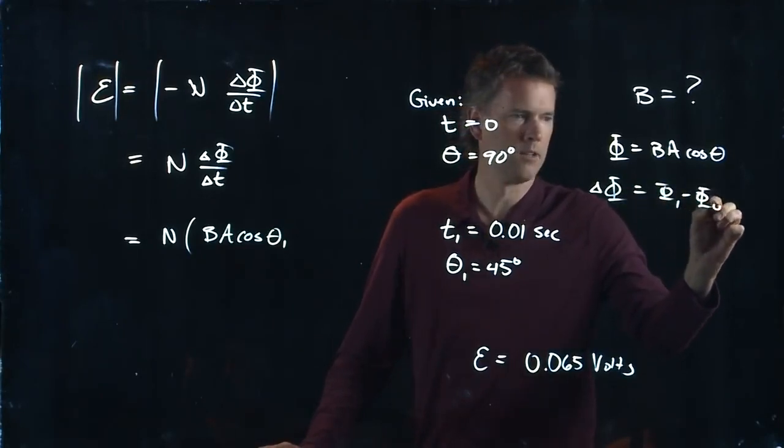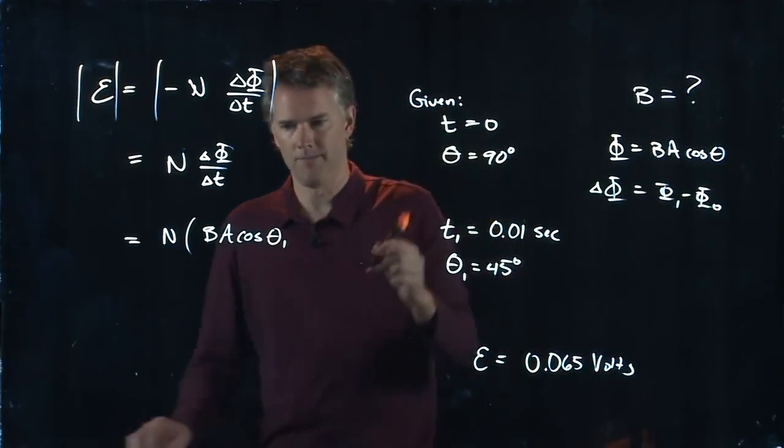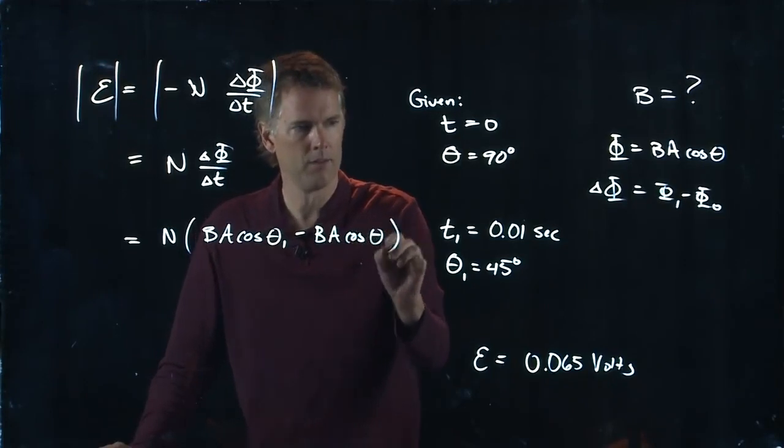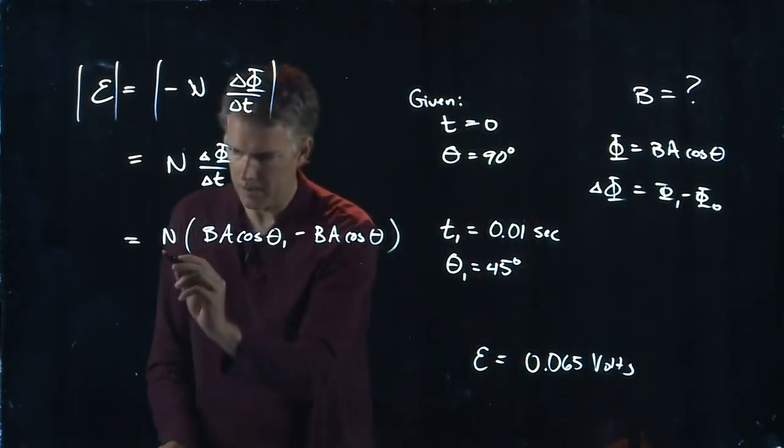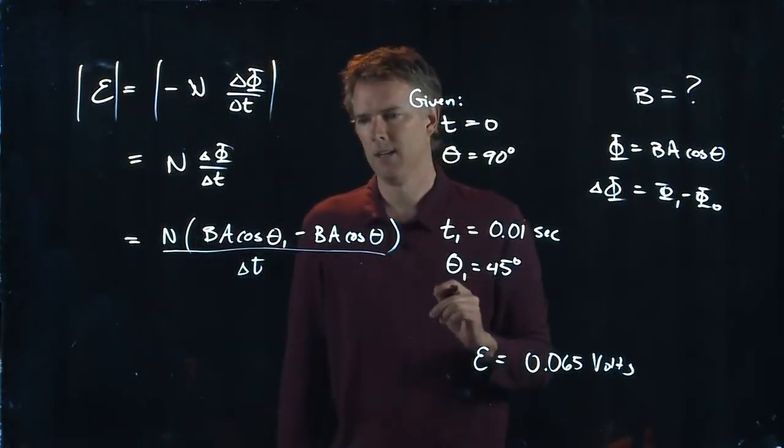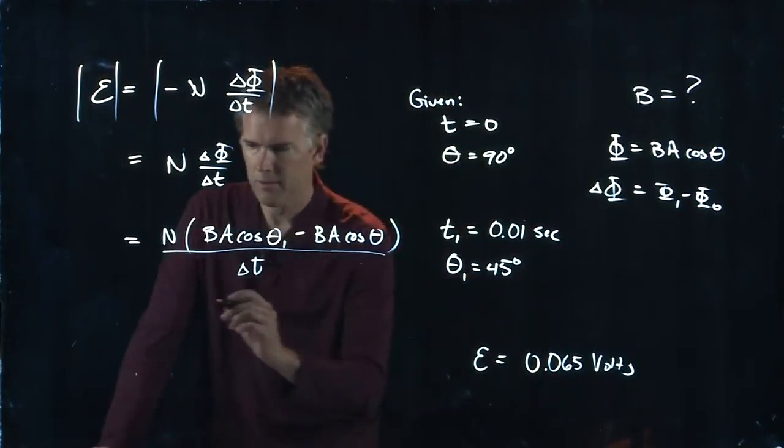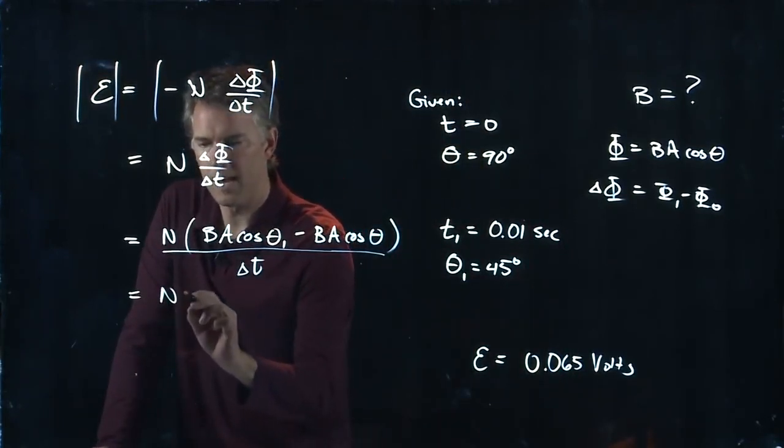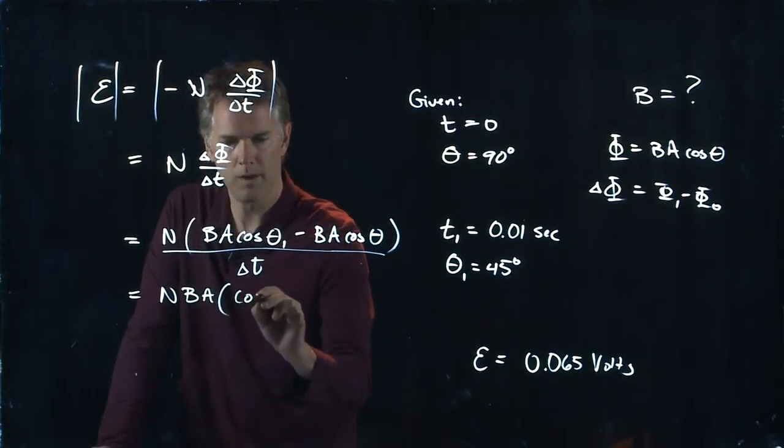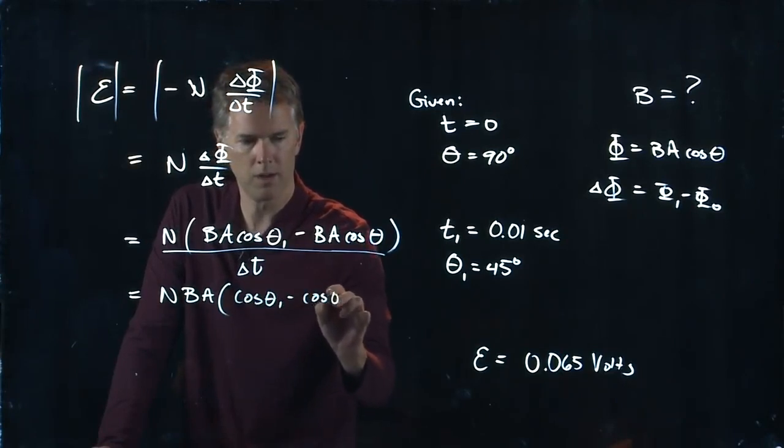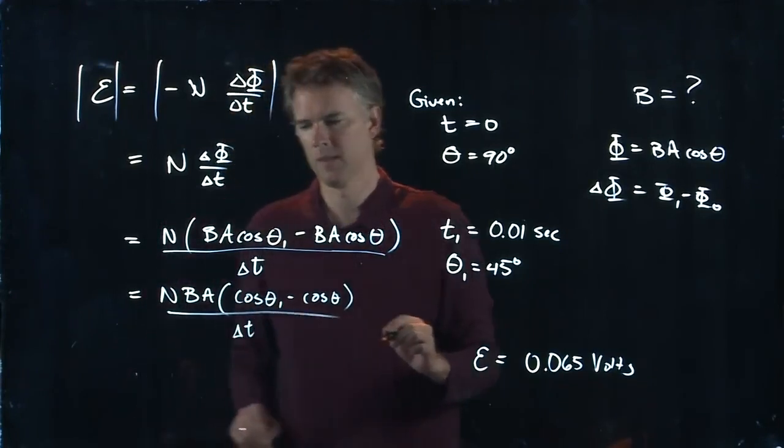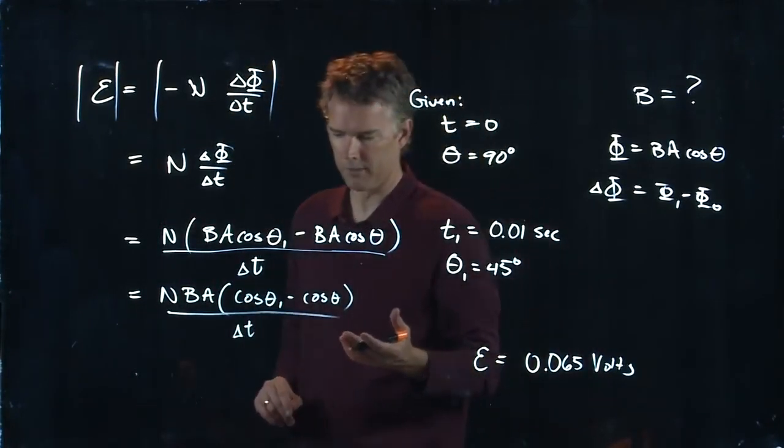And then we're going to subtract phi naught, which is B times A times cosine of theta, and we're all dividing that by delta t. Now we have some common factors, so we can factor out N times B times A, and we have the cosine of theta one minus the cosine of theta, dividing by delta t. Now we can solve this for B.